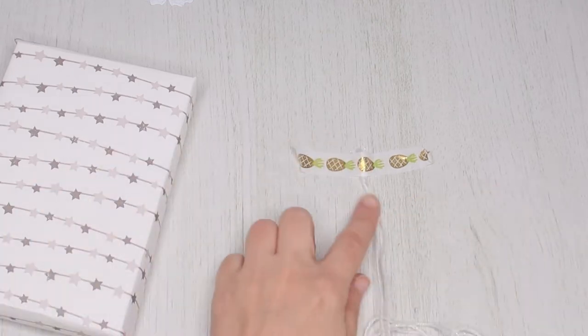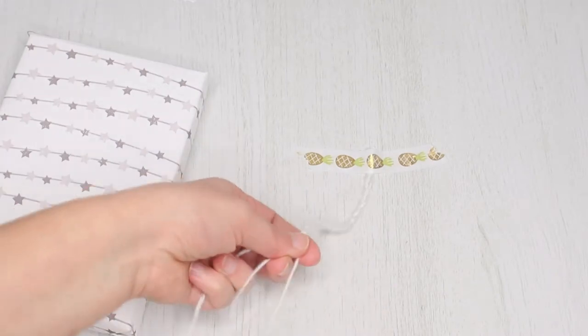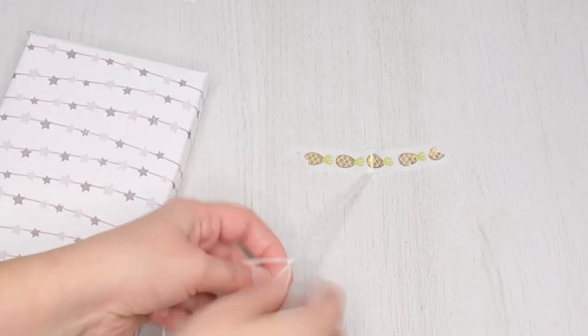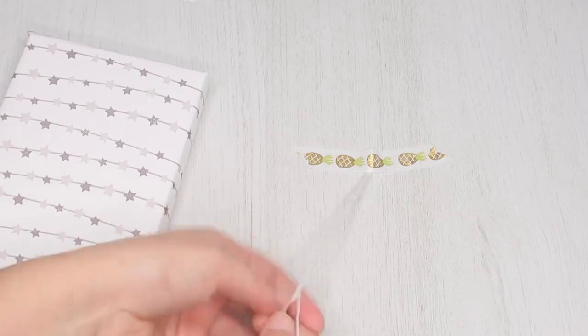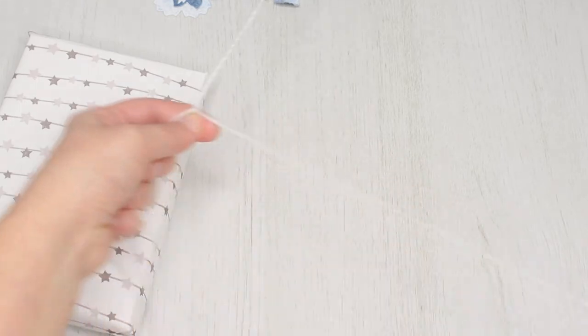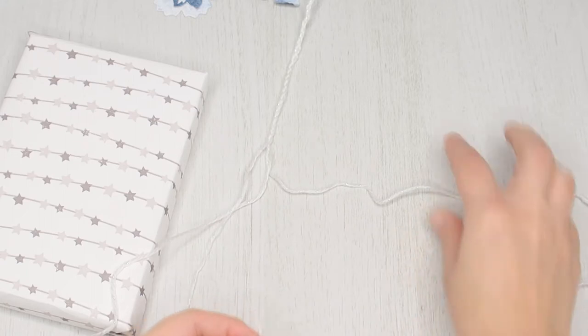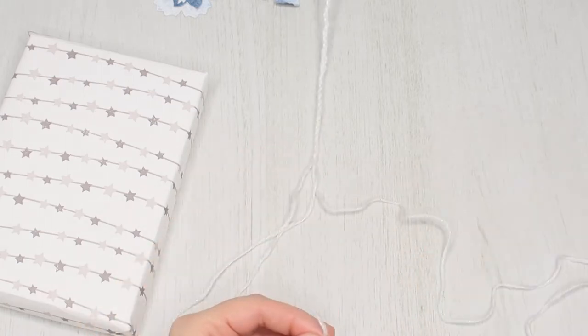We're gonna use the three threads to braid a very long cord. Now let's stop a bit and add a button. Just take one thread and pass it through one button.